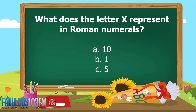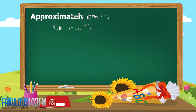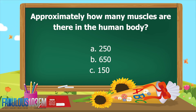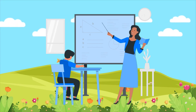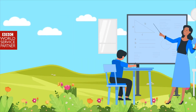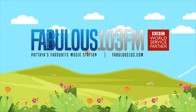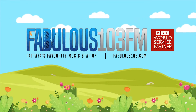And the last question for today: approximately how many muscles are there in the human body? Is it a) 250, b) 650, or c) 150? Let's see if you can get those right. Get ready to shout your answers at me tomorrow, same time here on Fabulous 103 FM.